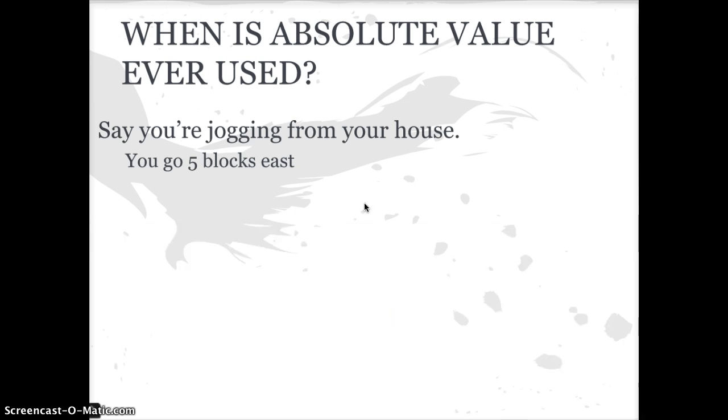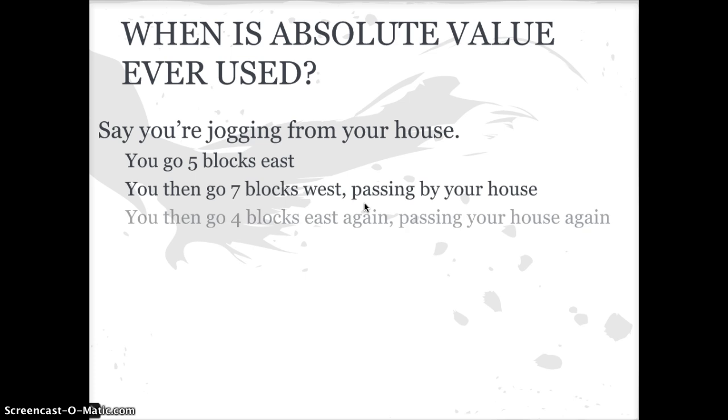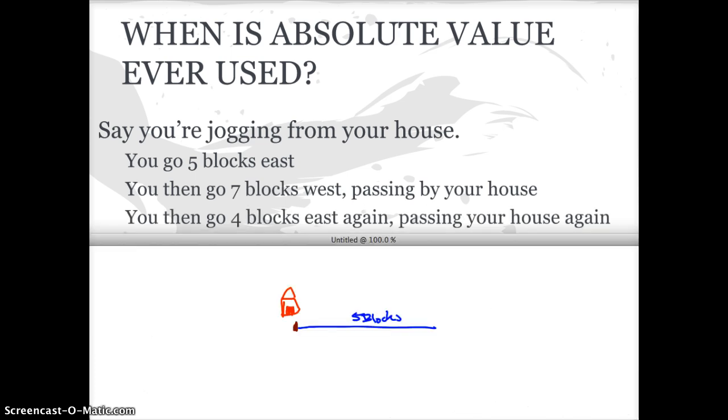Five blocks east. And then next we go seven blocks west, passing your house, and then four blocks east again. So I'm going to go seven blocks west, turn around. I'm going to go this way because I have nowhere else to run and there's nothing else to do but run around my house. Seven blocks west, and then I'm going to go four blocks east again. So seven, let's see, four blocks east again, four blocks.